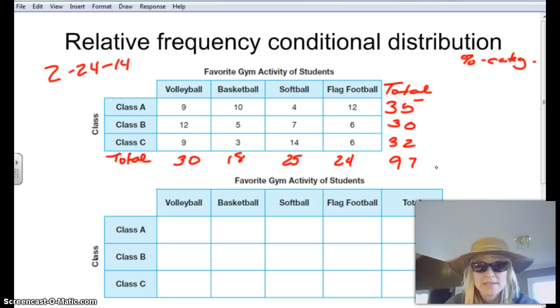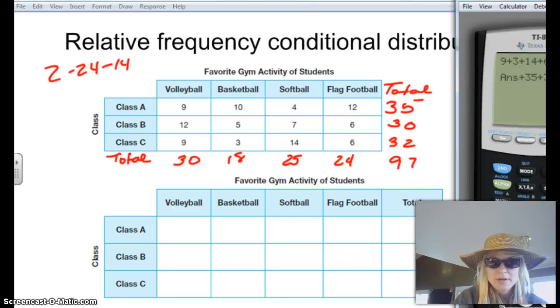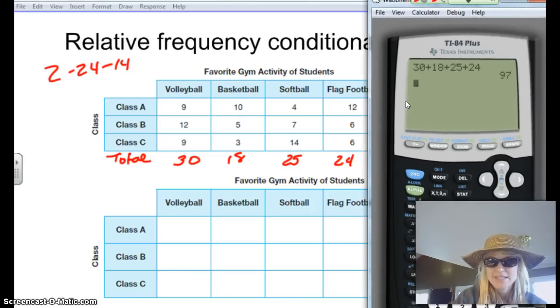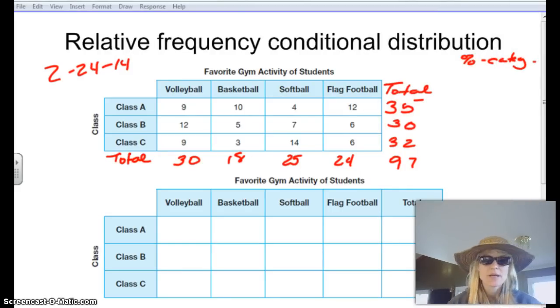And then I can double check that this 97 is right by adding up my numbers across the bottom row. So I can say 30 plus 18 plus 25 plus 24, and that gives me 97 too. So now we know that we have a conditional marginal frequency. We've got our totals each way. So I double checked our math, make sure all those totals are correct.